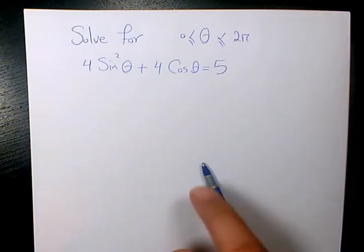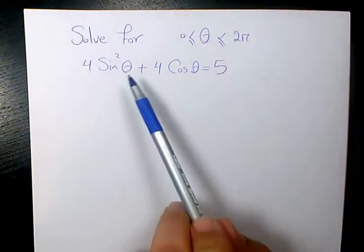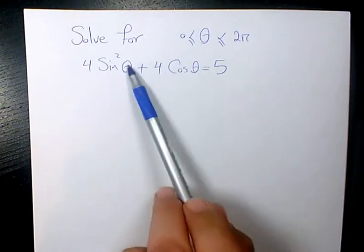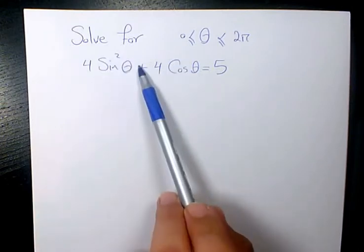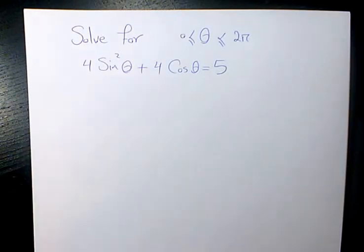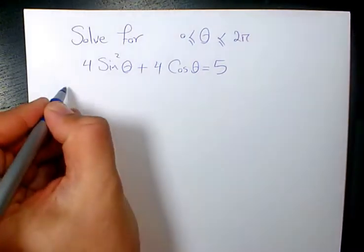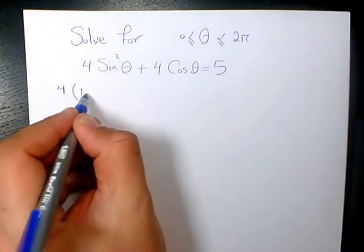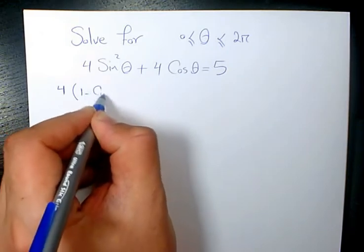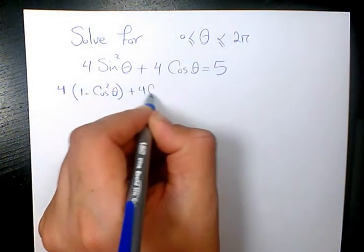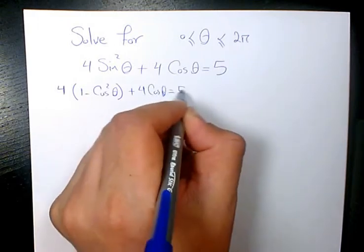So let's start. The first thing I need to do — here we have sine squared theta and here I have cosine theta. I need to convert sine squared to cosine. We know sine squared theta plus cosine squared theta equals 1, so I'm going to write 4 times 1 minus cosine squared theta plus 4 cosine theta equals 5.